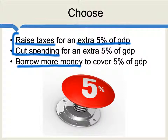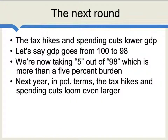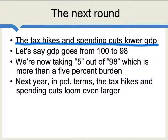Of course, you can do either one of those all the way to cover the whole 5%, or you can combine them. To look at the next round, let's see how this plays itself out. What we find first is that the tax hikes and spending cuts lower GDP — we explain this in greater detail in the video unit on austerity. But let's say for now, just for purposes of assumption, that GDP goes from 100 to 98.